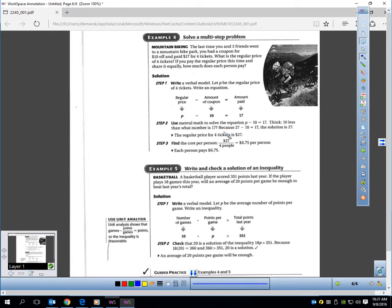Solving multi-step problems. We'll have a few of these in the homework. This will involve reading a word statement, setting up a model, setting up a verbal model, and then solving. So, here it says, the last time you and three friends went to a mountain bike park, you had a coupon for $10 off and paid $17 for four tickets. What's the regular price? So, the regular price is what we don't know.